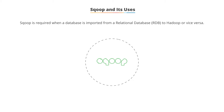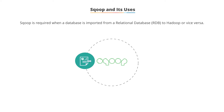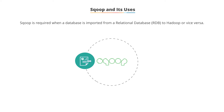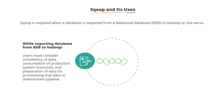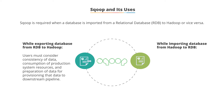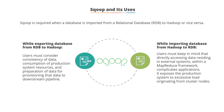Sqoop is required when a database is imported from a relational database into Hadoop or out again. A relational database, or RDB, refers to any data in a structured format. Databases in MySQL or Oracle are examples of a structured RDB. While exporting databases from a relational database to Hadoop, users must consider consistency of data, consumption of production system resources, and the preparation of data for provisioning to a downstream pipeline.